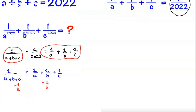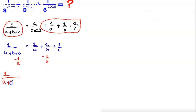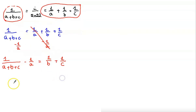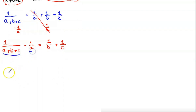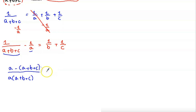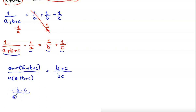We will subtract 1/a from both sides of the equation, giving us 1/(a+b+c) − 1/a = 1/b + 1/c. The LCM of (a+b+c) and a is a(a+b+c). This gives a − (a+b+c) over a(a+b+c) = (b+c)/bc. Since a − a cancels, we get −(b+c) / [a(a+b+c)] = (b+c)/bc.